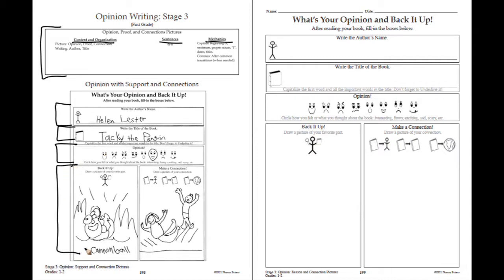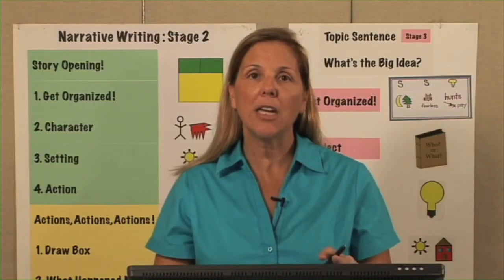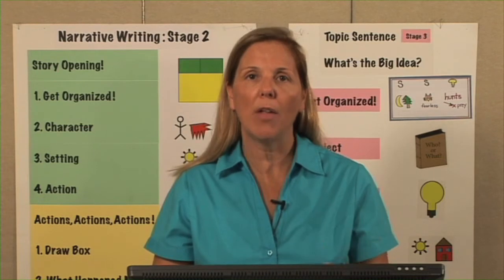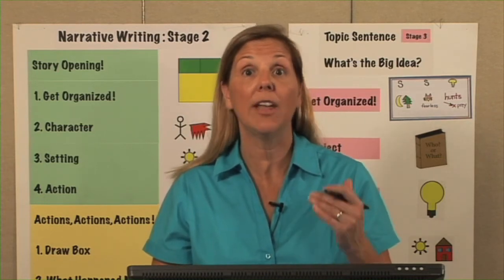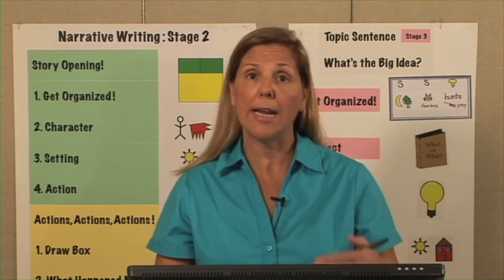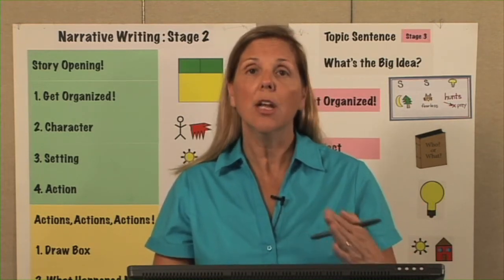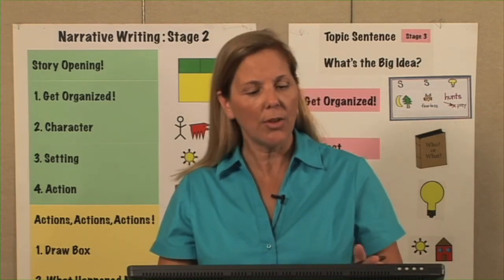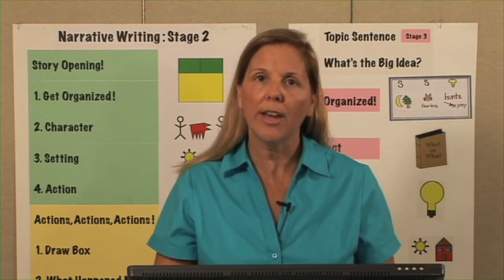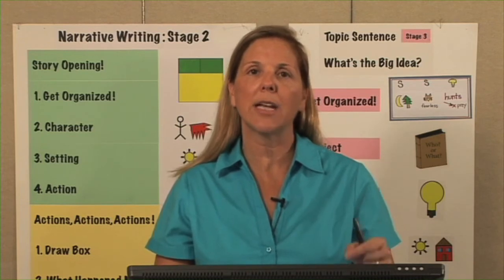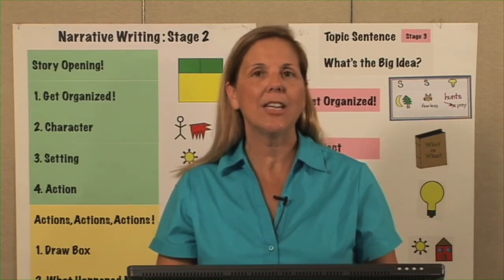We back it up with a picture and then make a connection with a picture. This stage is for children to just learn the elements of what they need to have in order to officially give an opinion. I have gone back to pictures and just writing out key information because most first graders are going to probably start at Stage 3, so that they learn all the different elements for their opinions by just drawing pictures or learning how to write titles and authors' names.